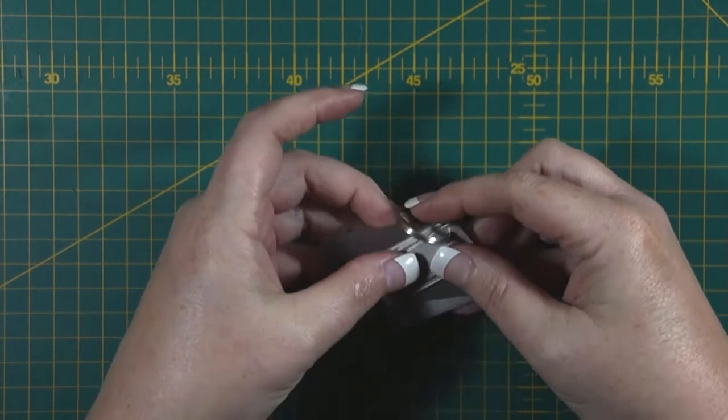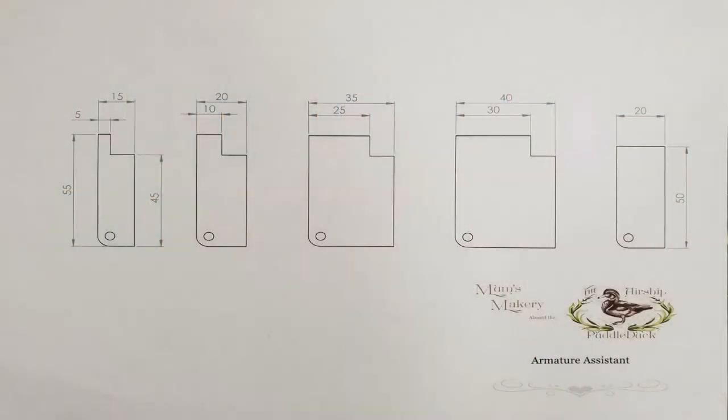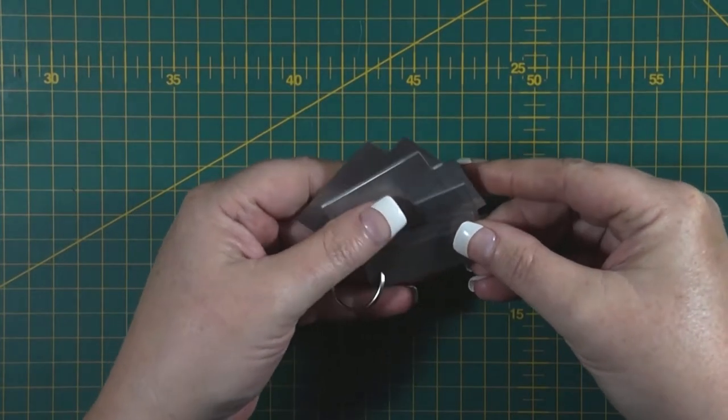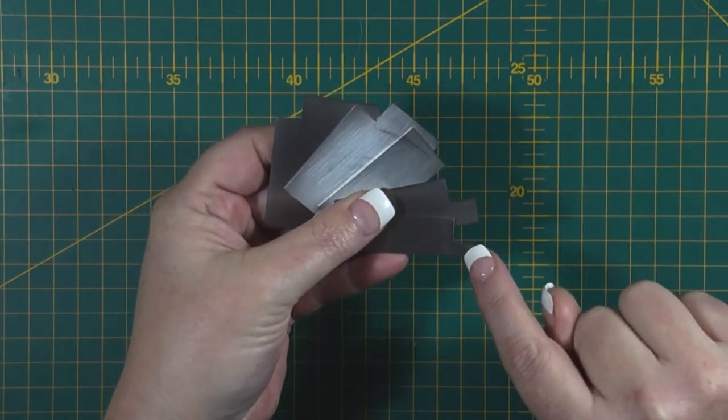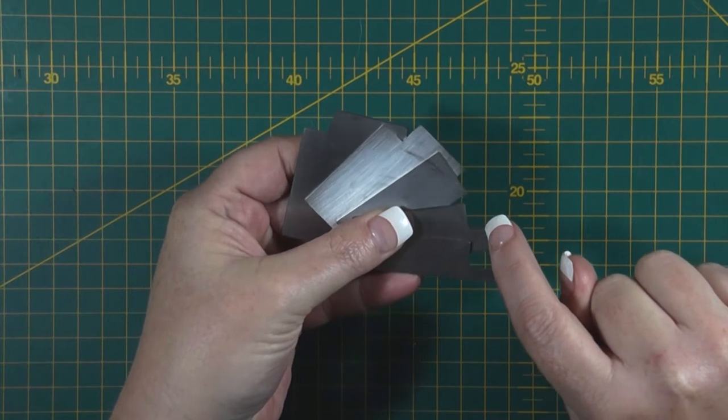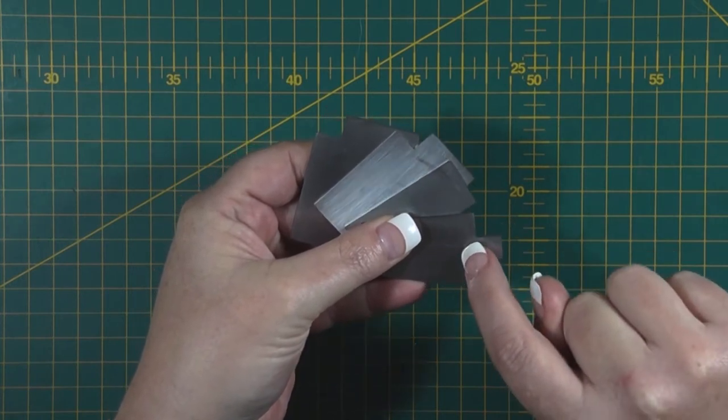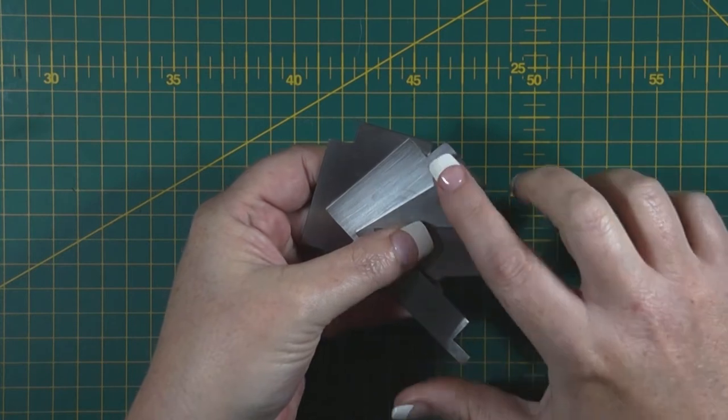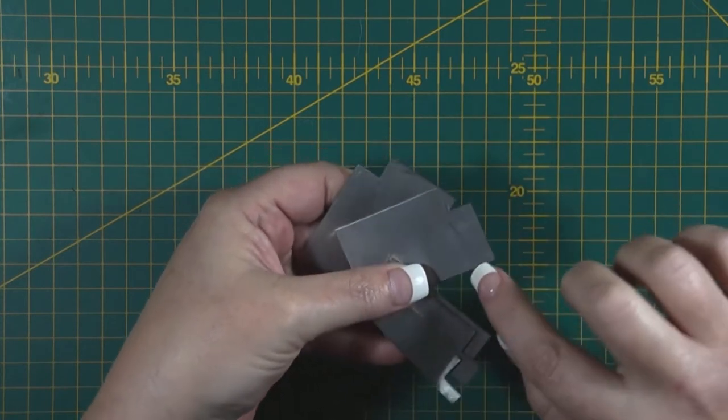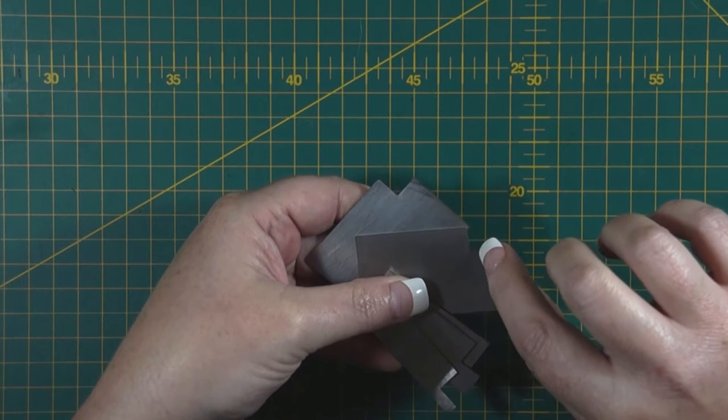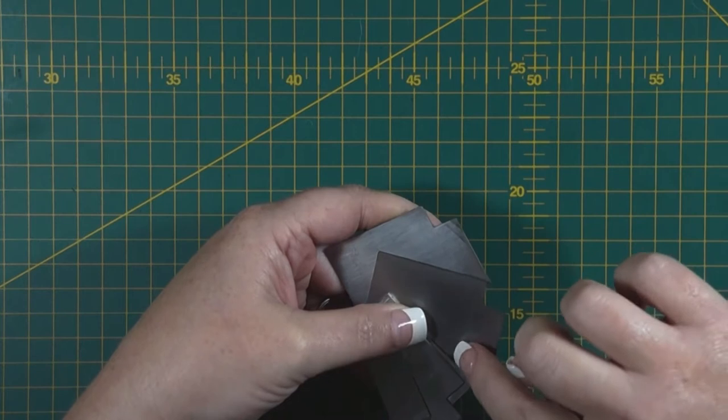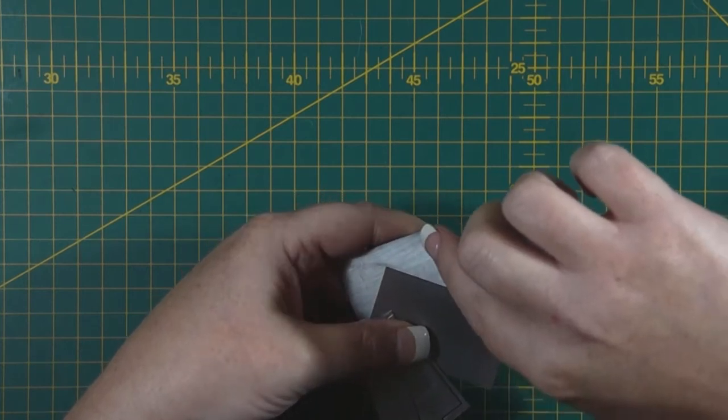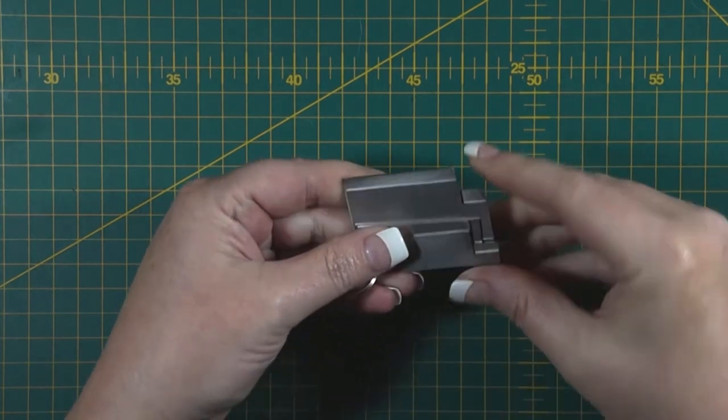It does come with a size chart so you know exactly which one is what size. It starts at five mil and here is how they increase. You have five mil, 10 mil, 15, 20, 25, 30, 35, 40.